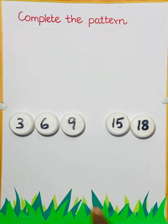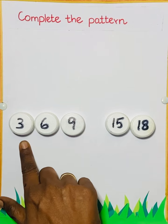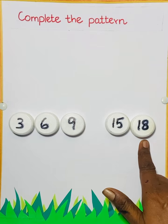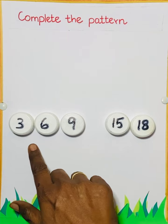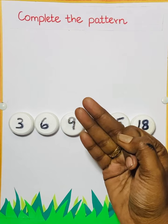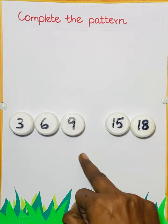Second one. Read the number 3, 6, 9, dash, 15, 18. So what is the skip counting of 3? See 3 after 4, 5, 6. So skip counting of 3.